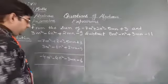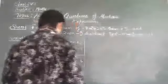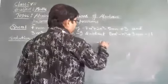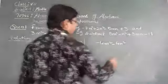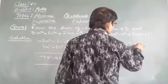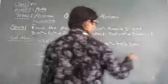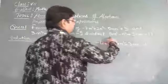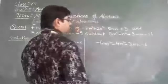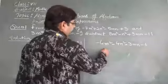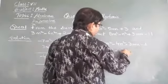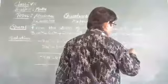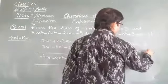Now from this we will subtract this expression. So we write minus 4n square minus 4n square minus 3mn and minus 6. Now we write this expression — 8m square — and we will arrange the like terms: minus n square plus 3mn and minus 11.